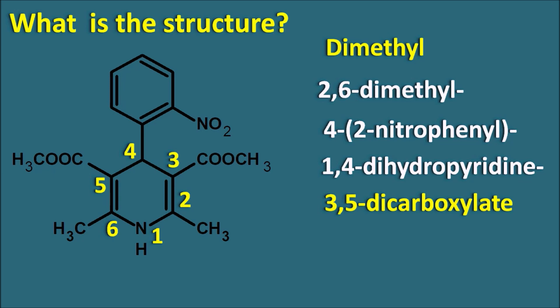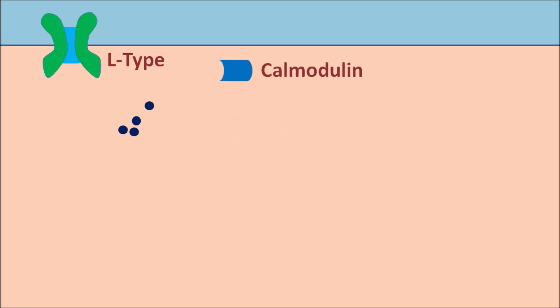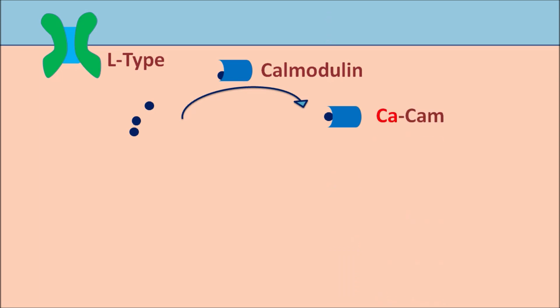Now let us see how this drug acts as a vasodilator. Nifedipine mainly acts on the vascular smooth muscle, which expresses L-type calcium channels. Through these L-type calcium channels, calcium can enter the vascular smooth muscle where it is responsible for contraction. This calcium binds to a protein called calmodulin, which is the modulator for calcium actions. Calcium binds to calmodulin to form the calcium-calmodulin complex, which is responsible for activating the contractile mechanism within the vascular smooth muscle.